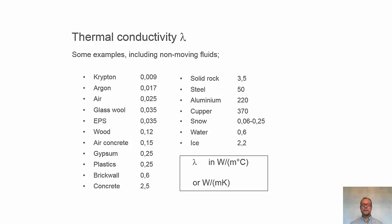Snow, which is very porous and contains a lot of air inside, is quite low. Then we have water and ice, and ice has quite high thermal conductivity.